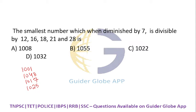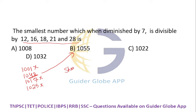Similarly, subtract seven from all the answer options. The resulting number should be divisible by 12, 16, 18, 21, and 28. For divisibility by 12, the number must be an even number. Checking each option: this is not the answer, this is not the answer, this is not the answer — that is the answer.